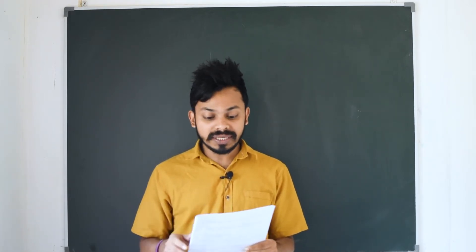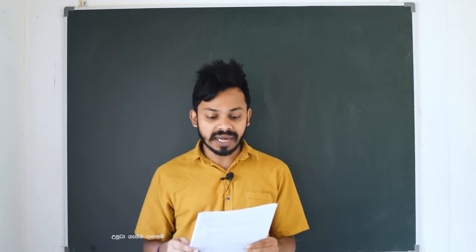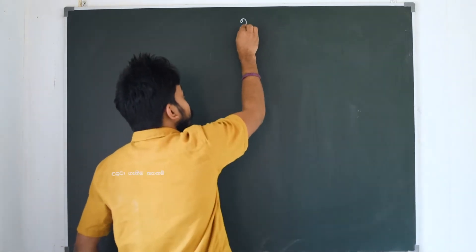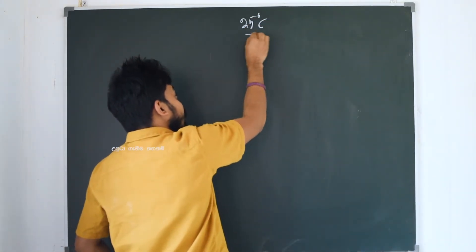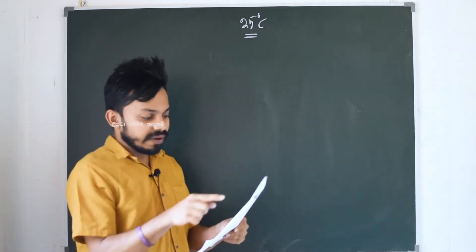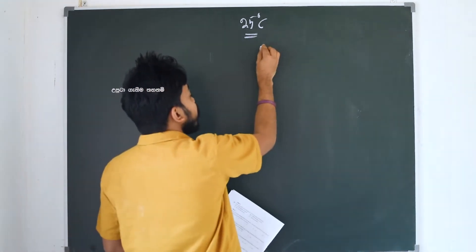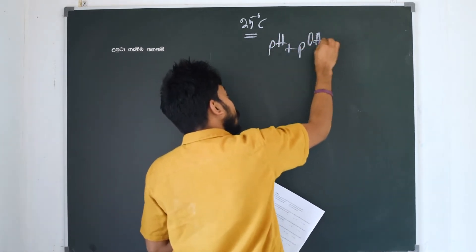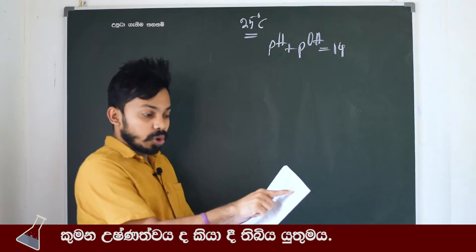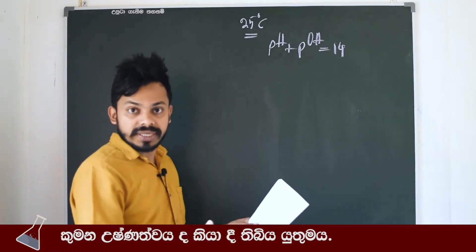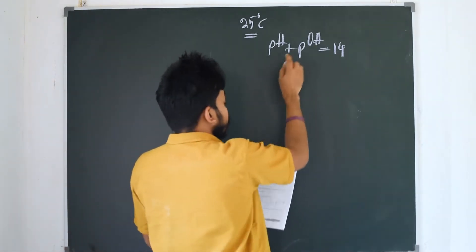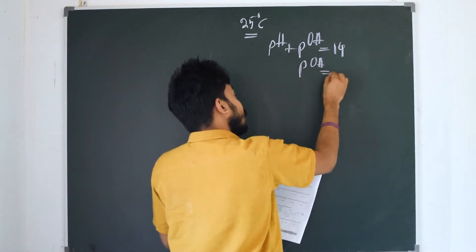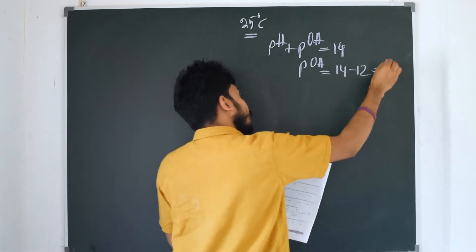We can use the pH as 2.5. What we need to know is the pH is 2.5. If pH is 2.5, we're using pH as 1.5. This is pOH. If pOH is 12, pOH is 12.